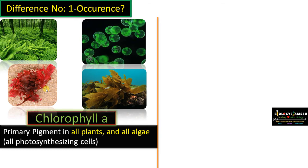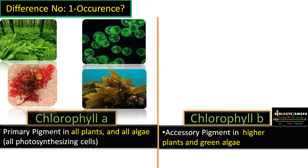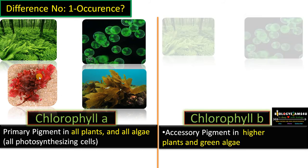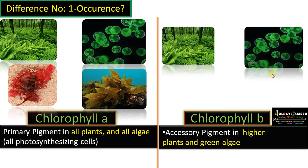Then why does red algae appear red instead of green? Because in red algae the pigment phycoerythrin, which gives red color, is predominant and actually masks the green color of chlorophyll — that is why it appears red. But remember, chlorophyll A is the principal pigment in all these plant groups including all types of algae. The exception is some photosynthesizing bacteria, where a special type called bacterial chlorophyll is present. Whereas chlorophyll B, called an accessory pigment, is present only in higher plants and green algae.